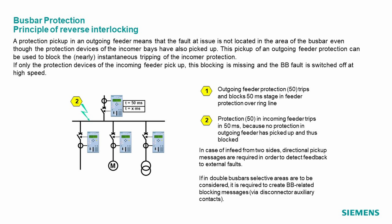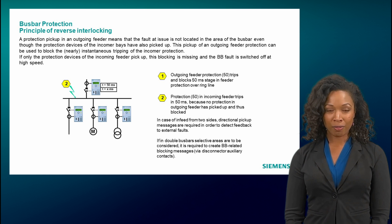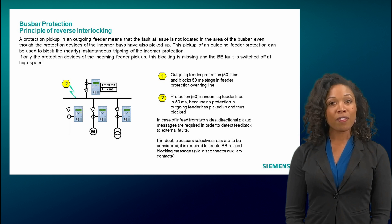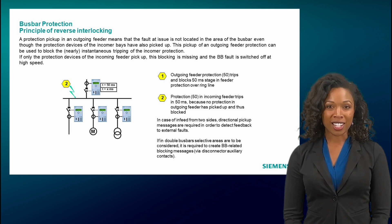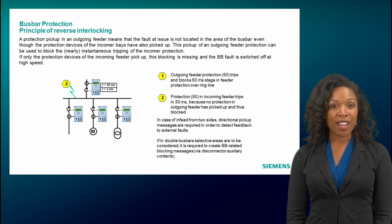Under the conditions described, the principle of reverse interlocking is a good and cost-effective solution as a busbar protection. However, if it is a switchgear with multiple busbar sections with longitudinal and transverse couplings, or if there is regenerative power via the outgoing feeders, or if a tripping time of 50 milliseconds is not sufficient, reverse interlocking becomes more complex. All these are aspects that may lead to using a busbar protection of type 7SS85 instead.